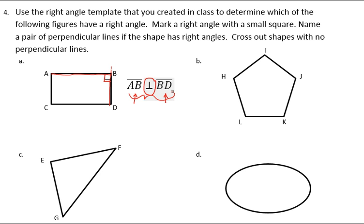If I move across to shape B, each of these angles is opened up wider than a right angle. So all of the angles are obtuse, so none of the line segments would be perpendicular. So this shape does not have any perpendicular lines.